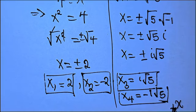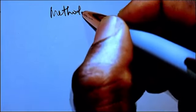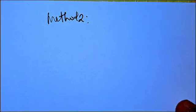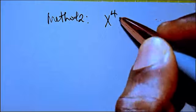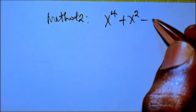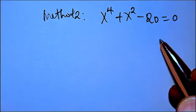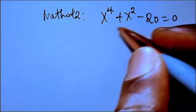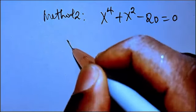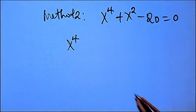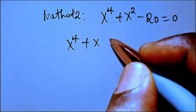Now let's use the second method, and then you can choose which one you prefer. For method 2, we have the equation x to the power 4 plus x to the power 2 minus 20 equals zero.